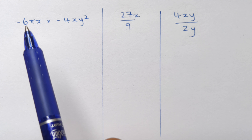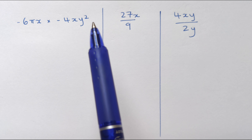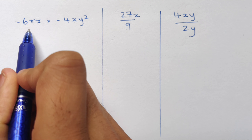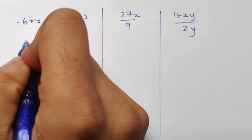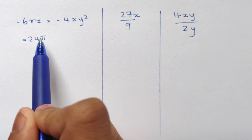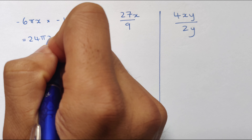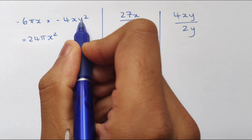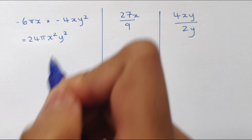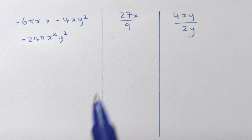Let's look at the example minus 6π x times minus 4xy squared. First the coefficients: minus 6π times minus 4 is 24π — remember π is just a constant. Then x times x is x squared, and we still have the y squared. So our answer is 24π x squared y squared.